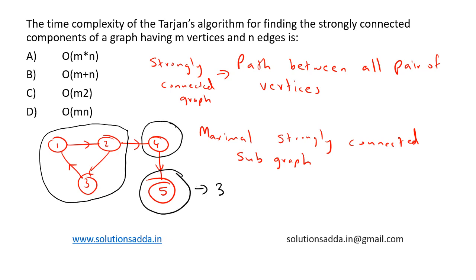So we have three strongly connected components — that is what strongly connected components mean. Tarjan's algorithm is based on the fact that if we perform a DFS search, it produces a DFS tree or forest. Strongly connected components form subtrees of this DFS tree, so if we can find the head of such a subtree,